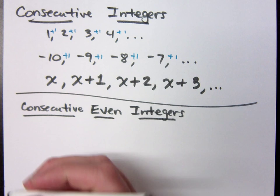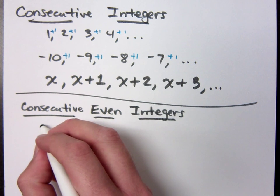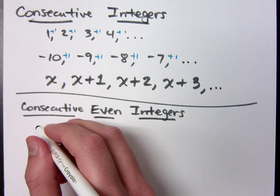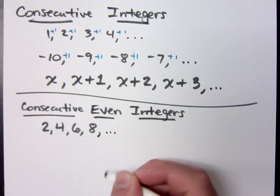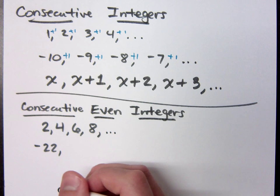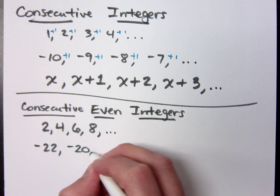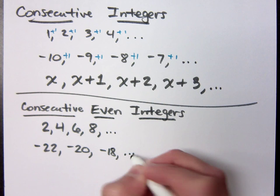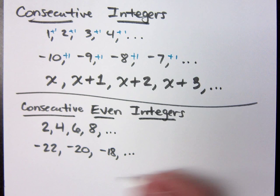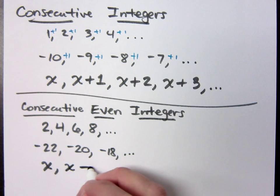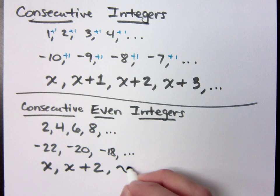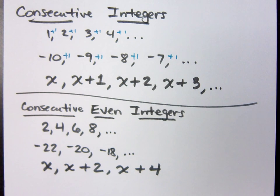Consecutive even integers — give me an example of that. Two, four, six, and so on — even numbers. If I start with negative 22, what's the next even integer? Negative 20, then negative 18, negative 16, and it keeps going. If I start with x, what's the pattern to go from one number to the next? I would add two, and I keep adding two. It keeps getting larger and larger as I go across.